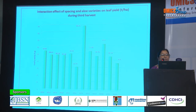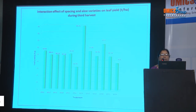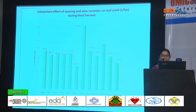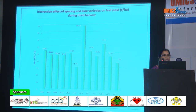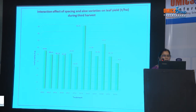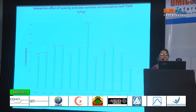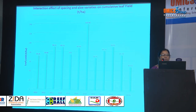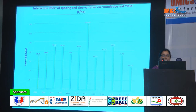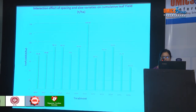This slide shows the interaction effect of spacing and aloe varieties on leaf yield during the third harvest and cumulative leaf yield per hectare. Planting of yellow flowering type at a spacing of 45×45 centimeters produced the maximum yield of 137.47 tons per hectare, which was the highest yield recorded.